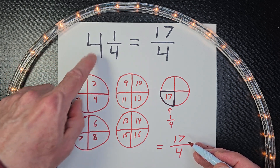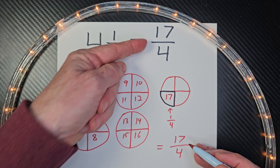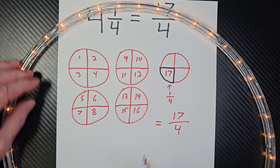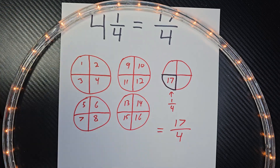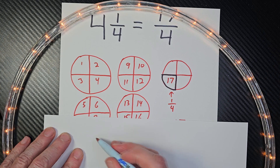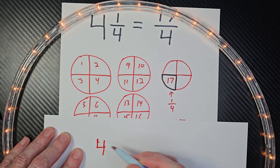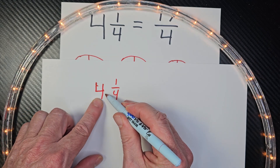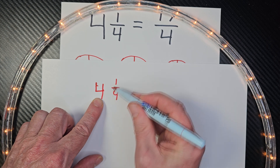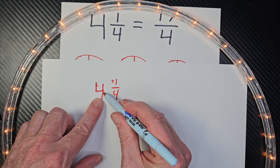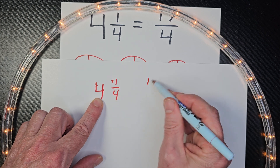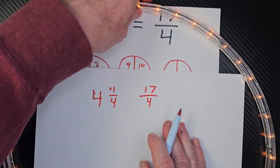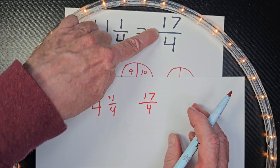So there's another easy way to get this number. You can take four and one-fourth, and I can take four times four, which would be sixteen, and then plus the one. So four times four is sixteen, plus the one, which would be seventeen, and you would keep the same denominator — seventeen fourths, which would equal your improper fraction.